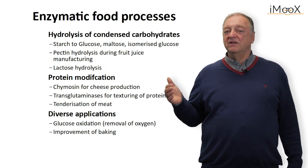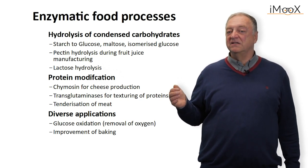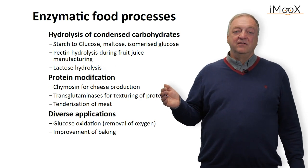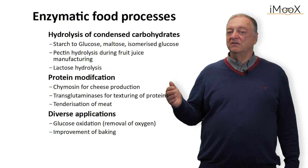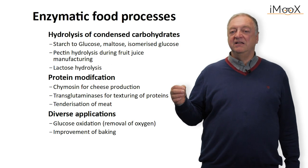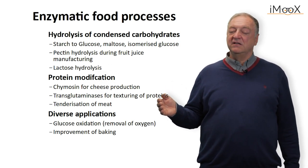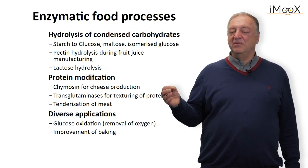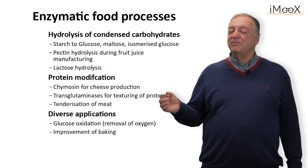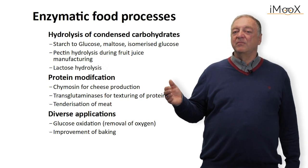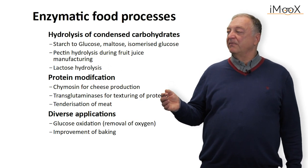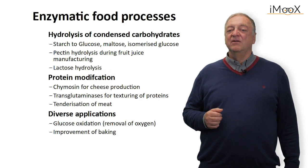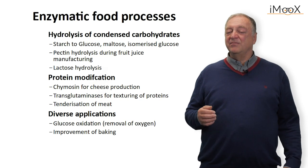Besides carbohydrate modification, we have the modification and hydrolysis of proteins — for example, hydrolysis with chymosin during the production of cheese. We can also use transglutaminases for building up large networks of proteins, meaning we achieve texturing of proteins in meat, fish, and milk products. Or we can use hydrolytical proteases that cleave the structure of proteins in meat, producing a more tenderized meat. Examples include papain from papaya and bromelain from pineapple. There are dozens of enzymes that can be used for food manufacturing.